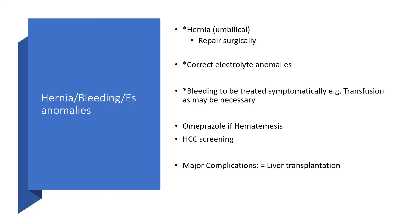For hernia, bleeding, and electrolyte anomalies: if there is umbilical hernia, repair surgically. If faced with electrolyte anomalies, please correct. In case of bleeding, treat symptomatically — for example, transfusion as may be necessary. If there is hematemesis, you can give omeprazole or any of the proton pump inhibitors. In case of hepatocellular carcinoma, we have to screen. And of course, if you are dealing with major complications that you can't handle with all these measures, get liver transplantation.